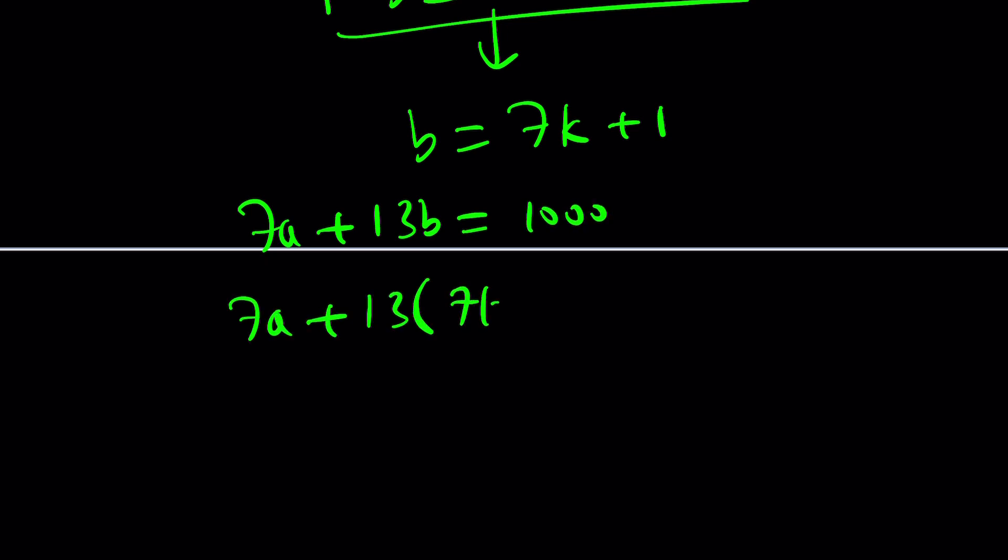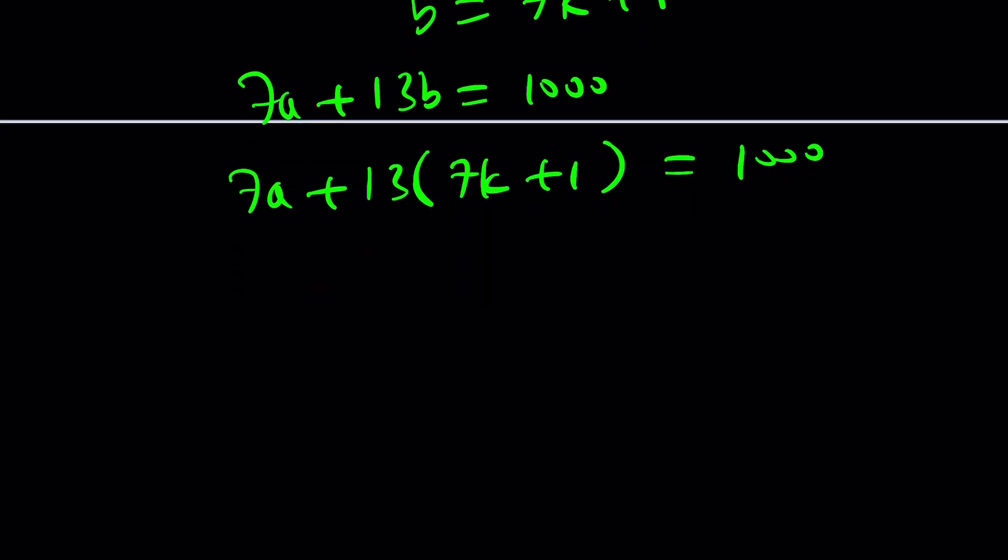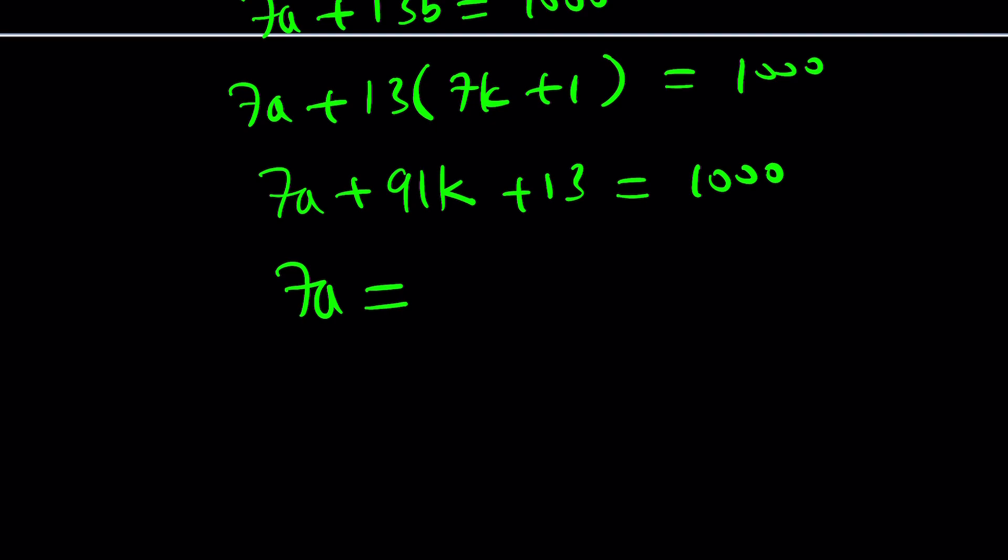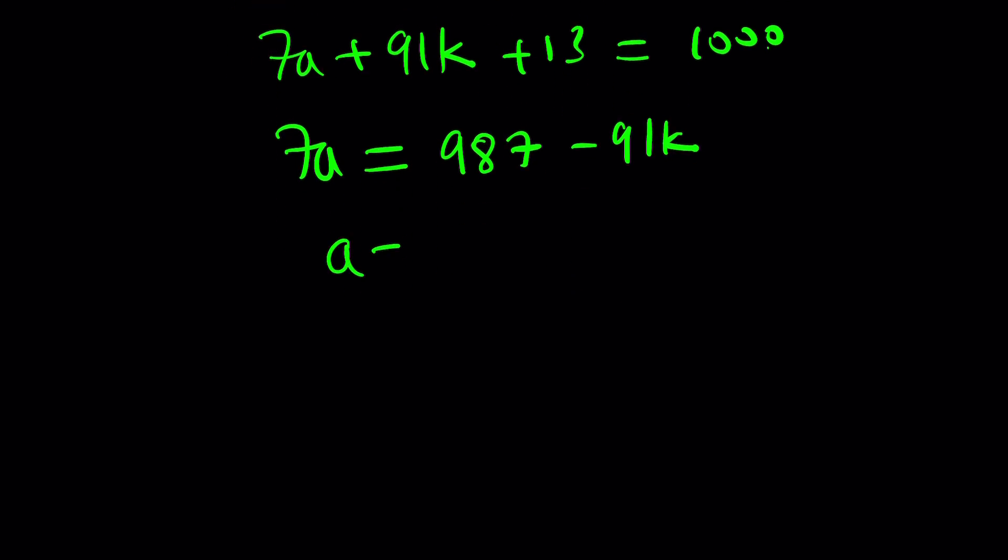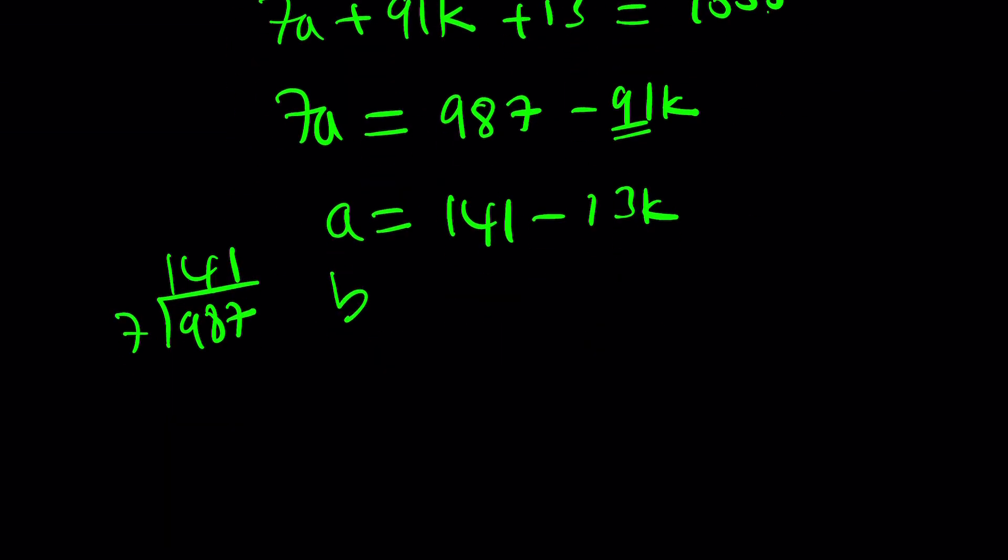This is really cool. You know why? Because you can take this into the original problem and plug it in. Replace B with 7k plus 1. This is going to be 1000. From here, you're going to get 7a plus 91k plus 13 equals 1000. And what we're going to do is we're going to isolate A completely. We're going to subtract 13 from this number, 987 minus 91k. All of these numbers are divisible by 7. So A from here, let me just divide. 7 goes into 987 how many times. It's 141. So it's 141 minus 13k because if you divide 91 by 7, you get 13. So this is the value of A. And remember, B equals 7k plus 1. So in other words, if K is an integer, it shouldn't be too large because you don't want to make A less than 0. This is going to give you all the solutions.